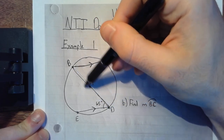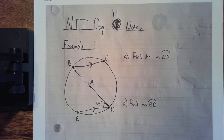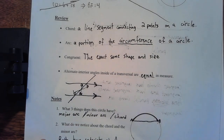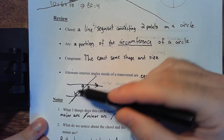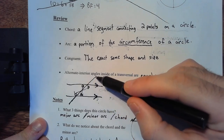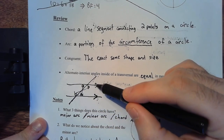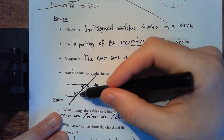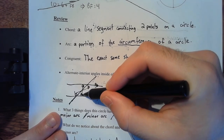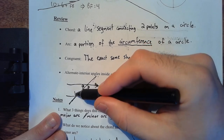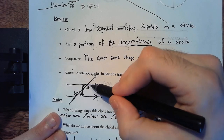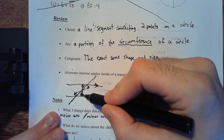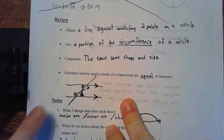Going back to the notes about alternate interior angles — for those of you that did not get this lesson, if you have two parallel lines and a diagonal line called a transversal cutting between them, the alternate interior angles are equal in measure. The alternate angle is on the other side of the transversal and down the street. So if angle B was 50 degrees, the alternate interior angle B would be 50 degrees. That's what alternate interior angles are.